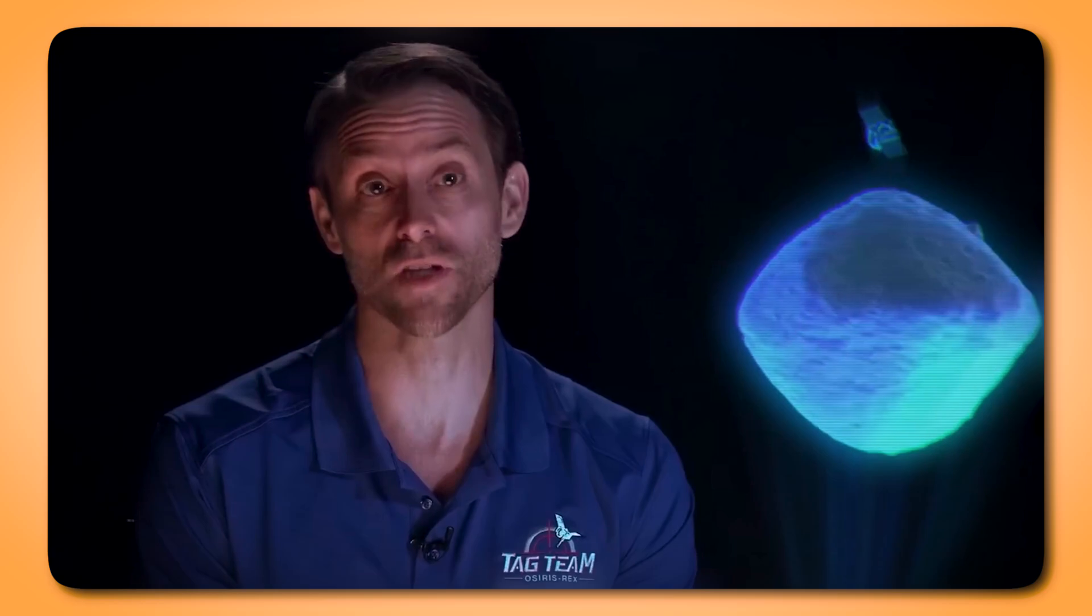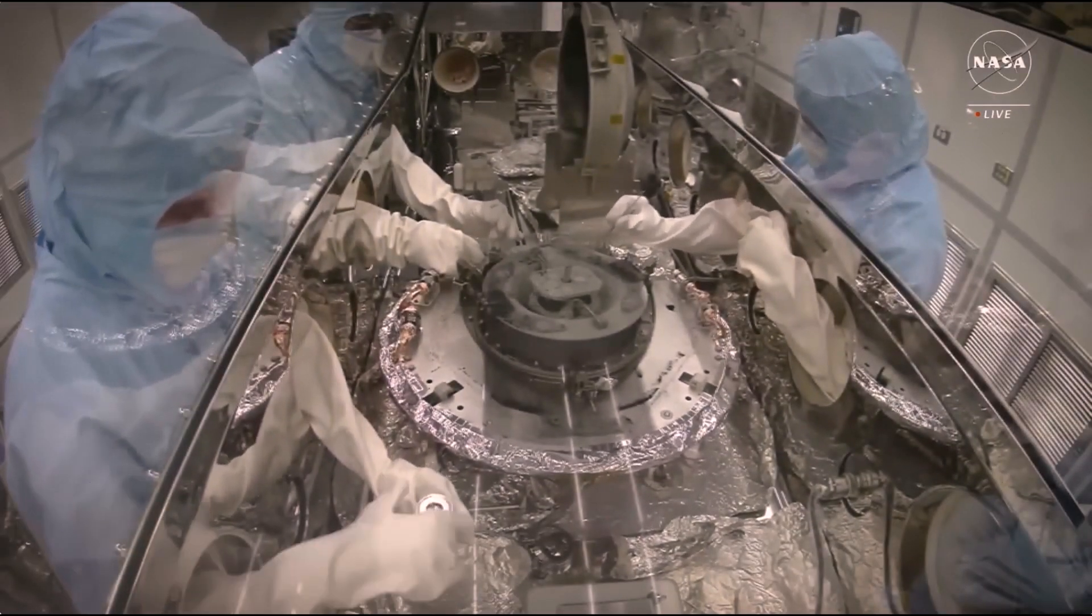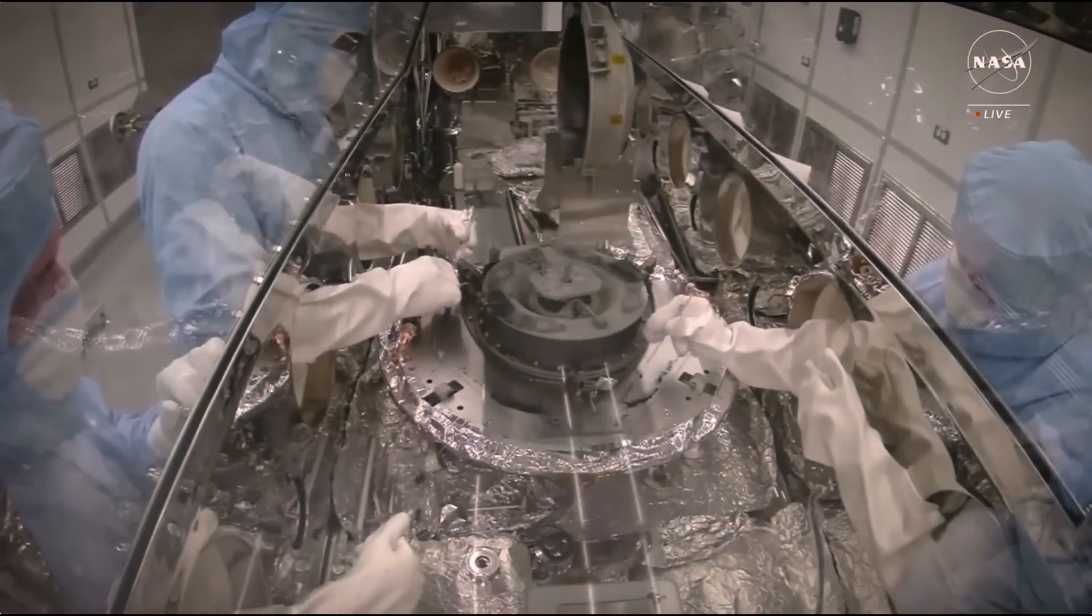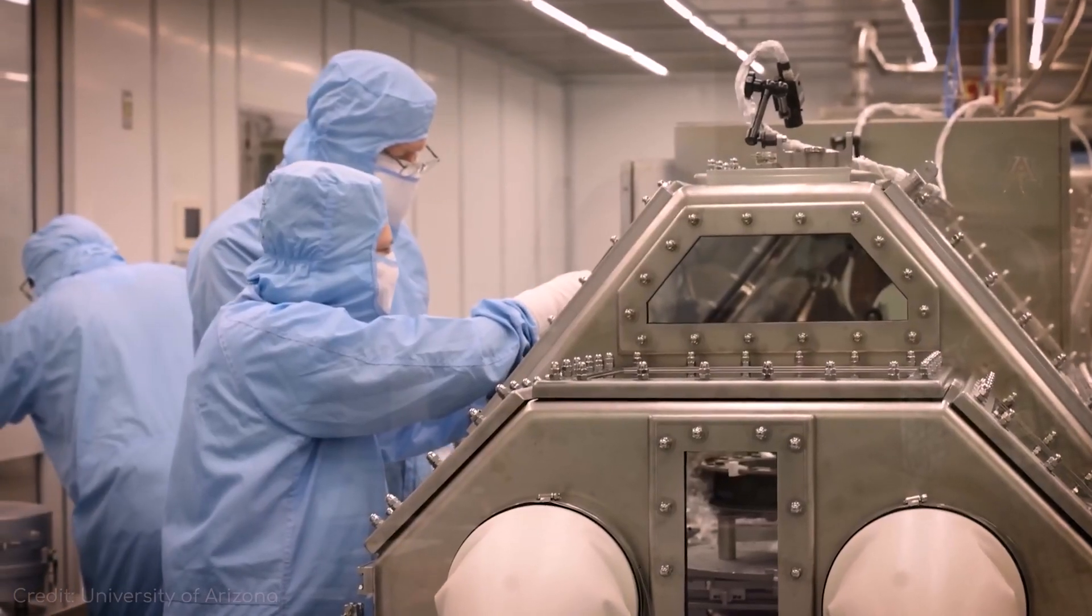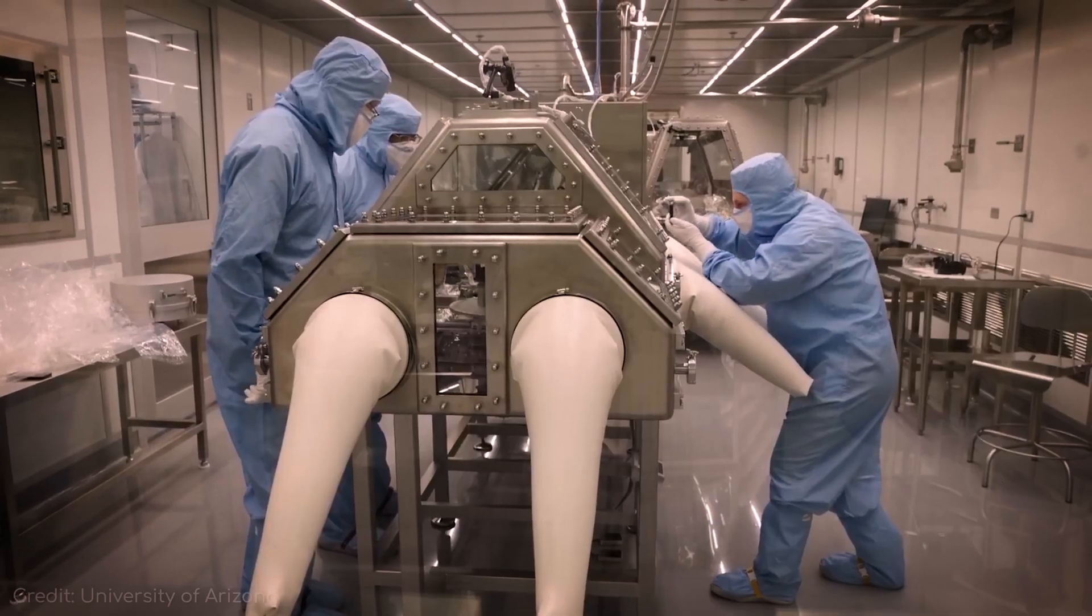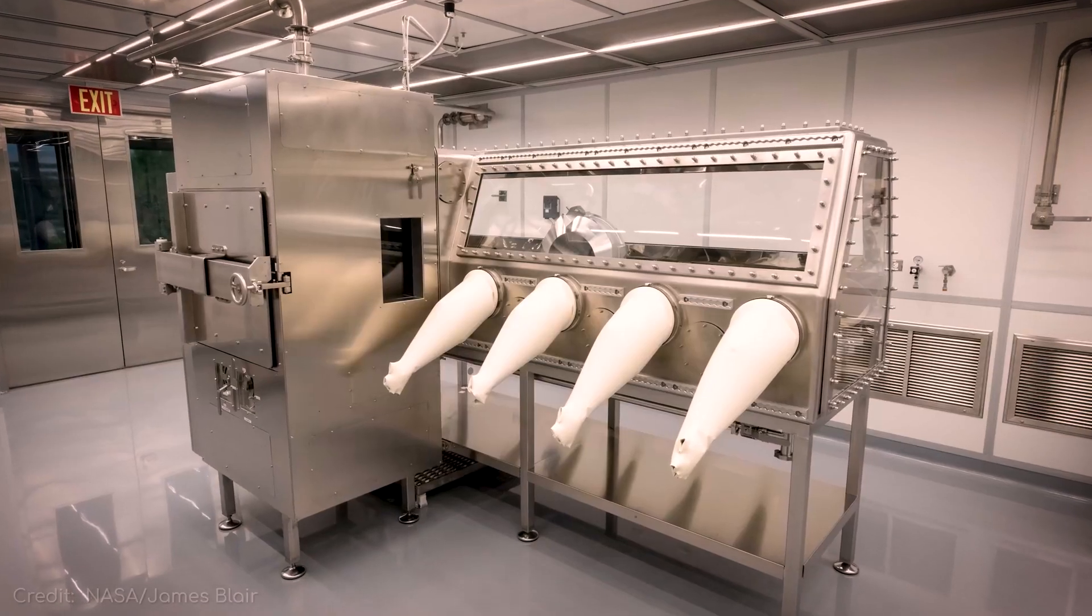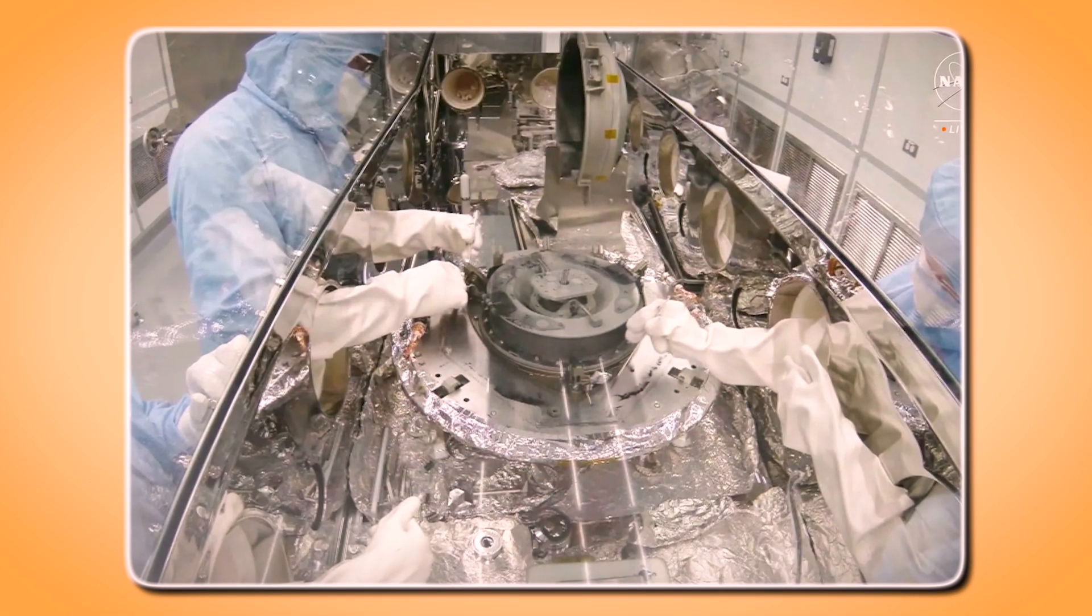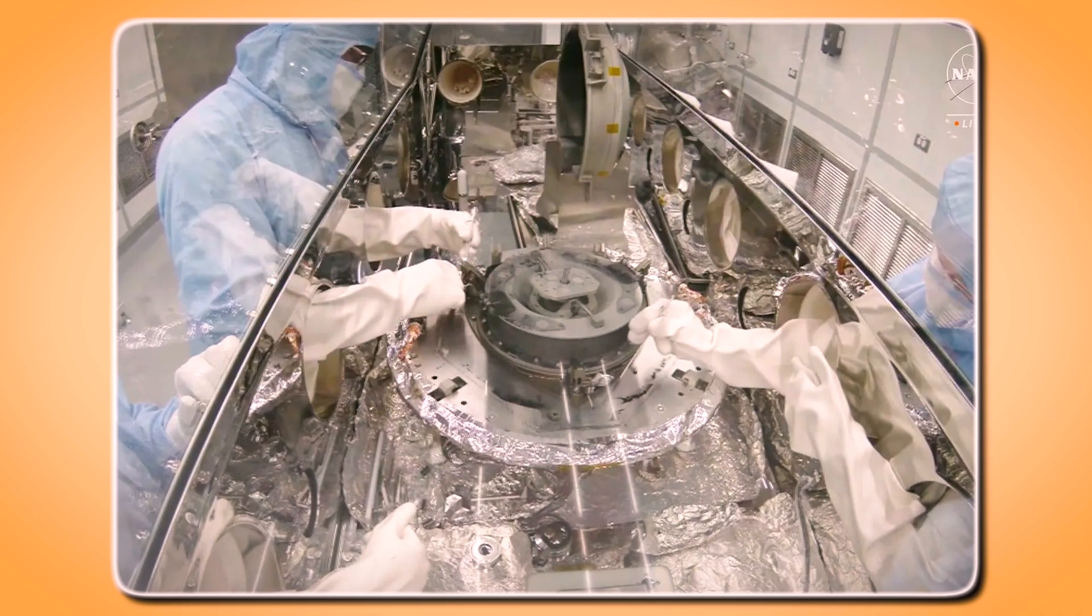They devised a new screwdriver-like tool, specifically tailored for the task. This custom tool, featuring specially fabricated bits, made from a unique grade of surgical, non-magnetic stainless steel, was designed, manufactured, and rigorously tested. Only after passing stringent tests could it be introduced into the pristine environment of the nitrogen-purged glove box, ensuring the sample remained uncontaminated. Thanks to this innovative solution, the curation team was finally able to access the canister's interior three and a half months after the return capsule landed.